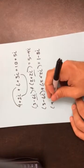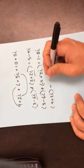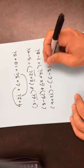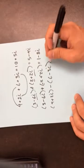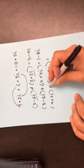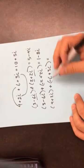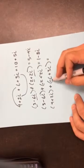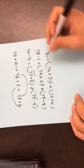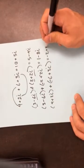So anytime I'm dealing with a subtraction, I'm just going to distribute the minus sign — change this to a plus and change the sign of both of these. So now it's 4 minus 6 is negative 2, and 2i plus 3i is 5i.